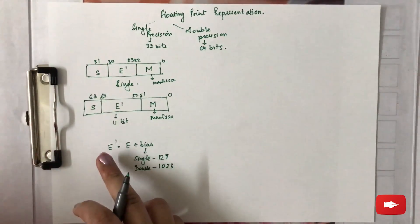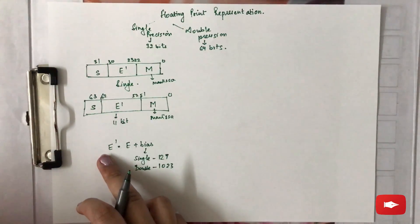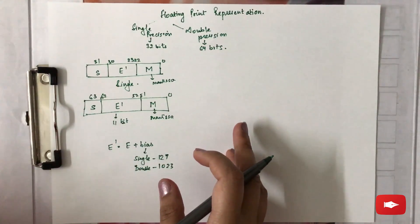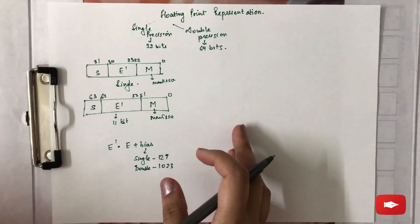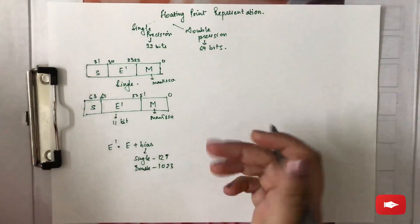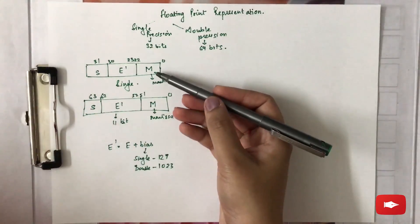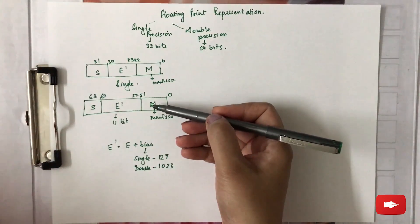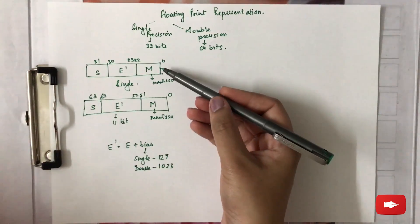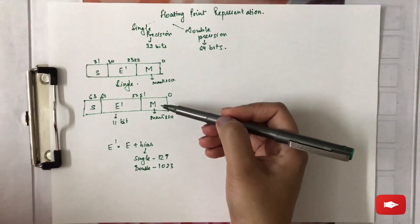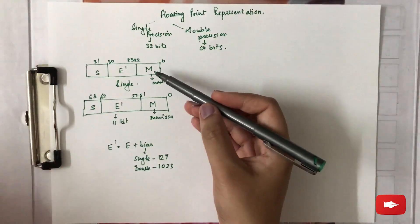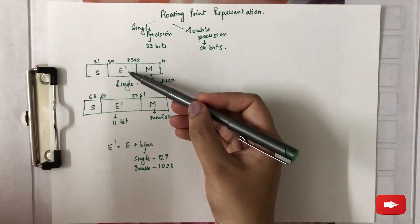The modified exponent e-dash — and how it results — we will see when we solve a numerical. Basically, single precision is 32 bits and double precision is 64 bits; everything is the same except for e-dash.